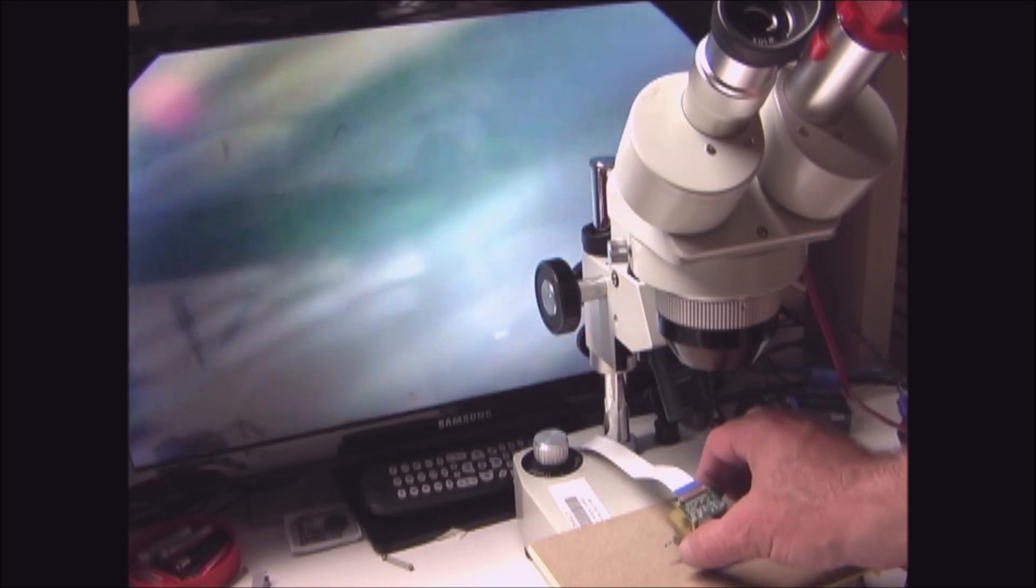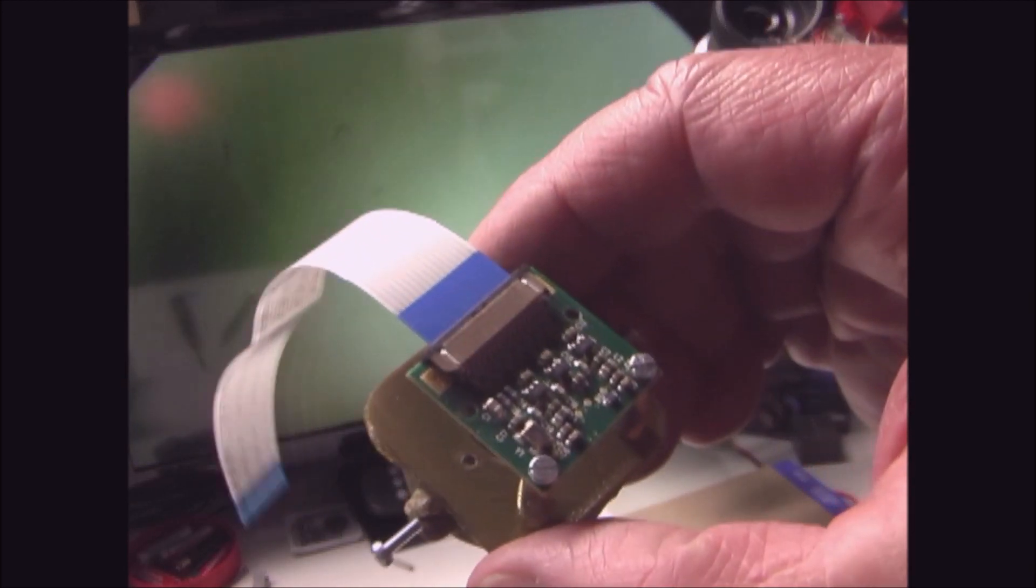What we're looking at here is the back of a Raspberry Pi camera at 30 power.